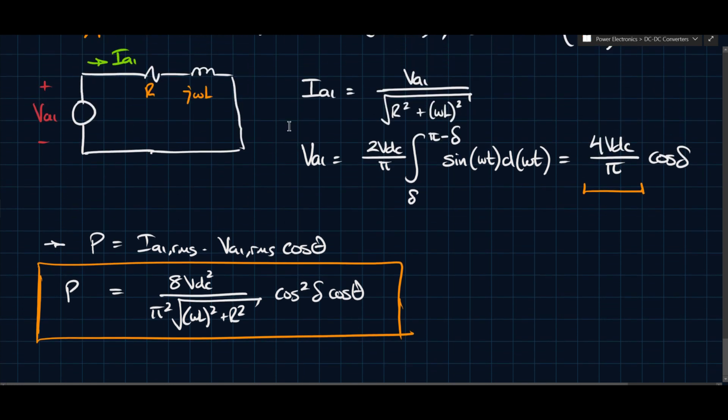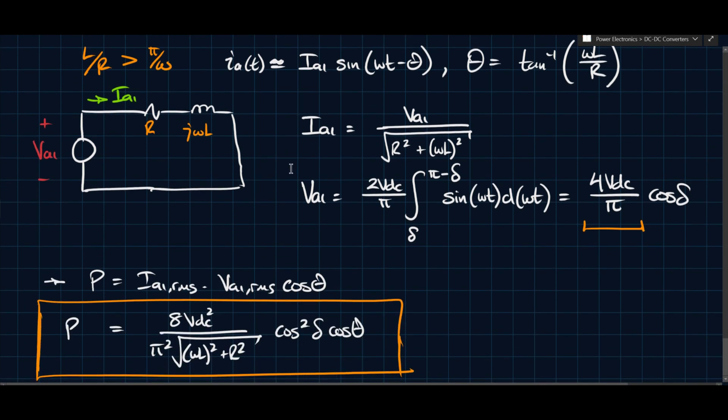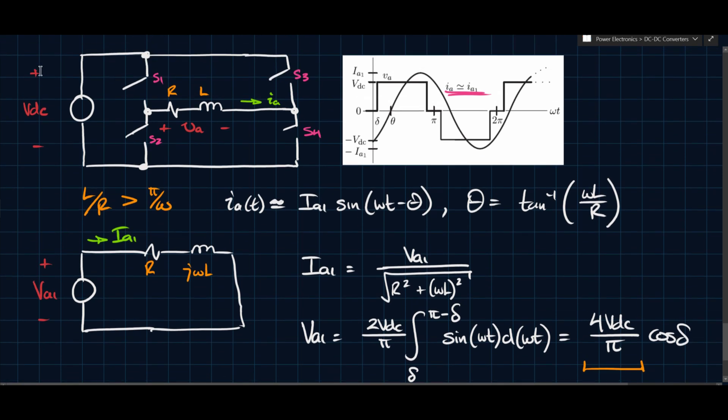So in a passive load, which is this is a passive load because there's no active components here, in a passive load, the power factor is fixed. And we can control the power only by varying delta or VDC. So in the previous video, we said that if you had some way of controlling VDC here, then you could control the voltage that is applied to the load.